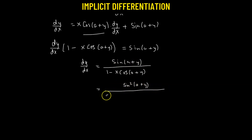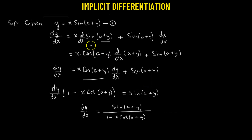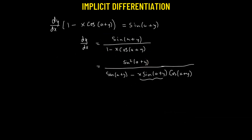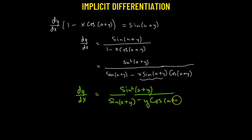The denominator becomes sin(a + y) minus x·sin(a + y)·sin(a + y). In the second term of the denominator, x·sin(a + y) can be replaced by y, as obtained in equation number one. So we finally get dy/dx = sin²(a + y) divided by (sin(a + y) − y·sin(a + y)). This is what we were asked to prove — hence, we have successfully proved it.